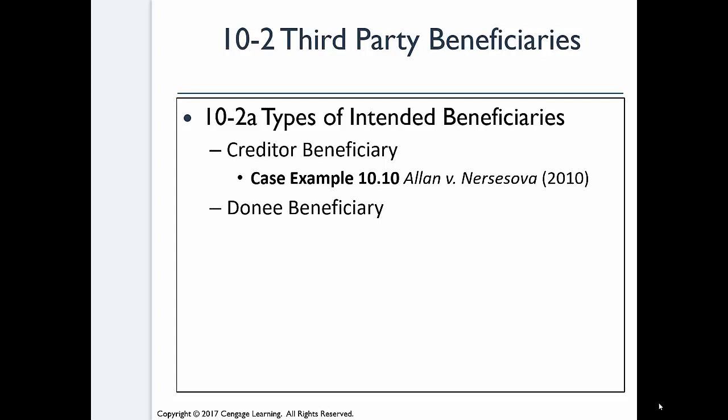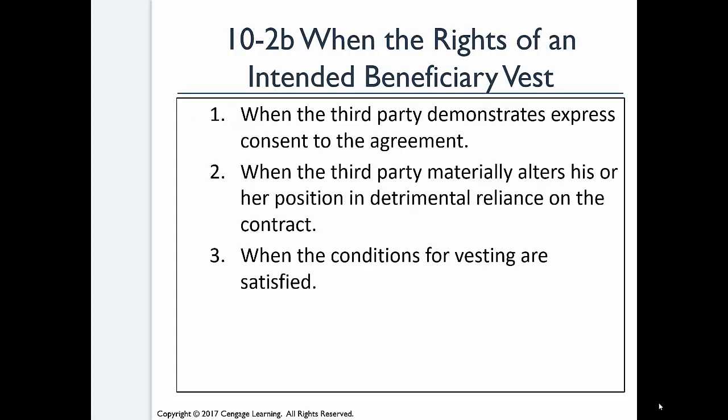You can have creditor beneficiaries — people who benefit from a contract where one party promises someone else to perform — and donee beneficiaries, which is a contract made for giving a gift to a third party, like your life insurance contract. The intended beneficiary has vested rights only in a few instances: the third party must demonstrate express consent to the agreement, or could materially alter their position in detrimental reliance on the contract, or when the conditions for vesting laid out in the contract have been satisfied.